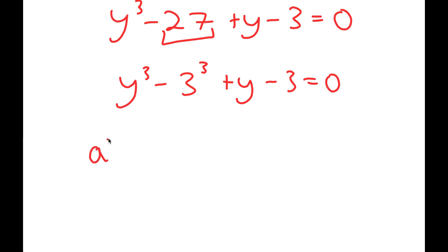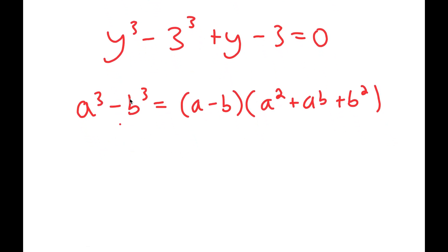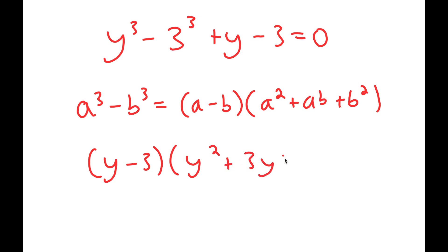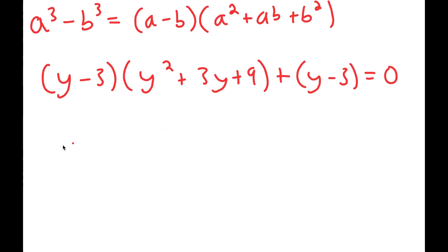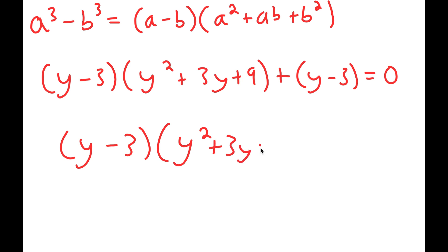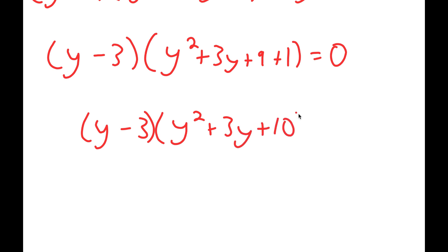Now if I have something in the form a to the power of 3 minus b to the power of 3, this is equal to a minus b times a squared plus ab plus b squared. So now this turns into y minus 3 times y squared plus 3y plus 9, and I have plus y minus 3 at the end is equal to 0. From here, I can factor out y minus 3, so I get y minus 3 times y squared plus 3y plus 9 plus 1 is equal to 0, which turns into y minus 3 times y squared plus 3y plus 10 is equal to 0.